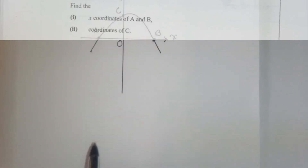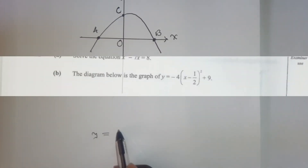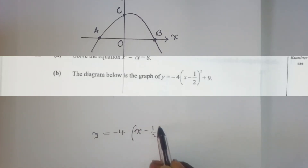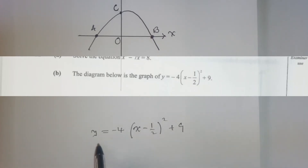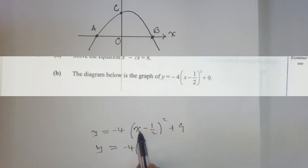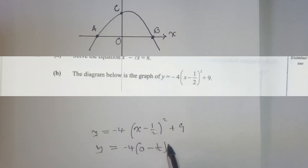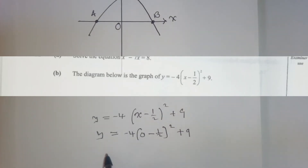We copy the equation: y equals negative four times open bracket x minus one over two close bracket squared plus nine. To find the y-intercept, we let x equal zero and write zero in the bracket, giving y equals negative four times open bracket zero minus one over two close bracket squared plus nine.